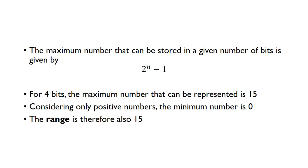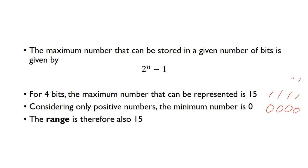We can work out the maximum number that can be stored in a given number of bits: it's two to the power n minus one. For decimal it was 10 to the n minus one, but binary is base two, so it's two to the power n minus one. For four bits, the maximum number we can represent is fifteen — that's 16 minus one. The minimum is zero (0000) and the maximum 15 is 1111, since one plus two plus four plus eight equals fifteen. So the range for four bits is fifteen.